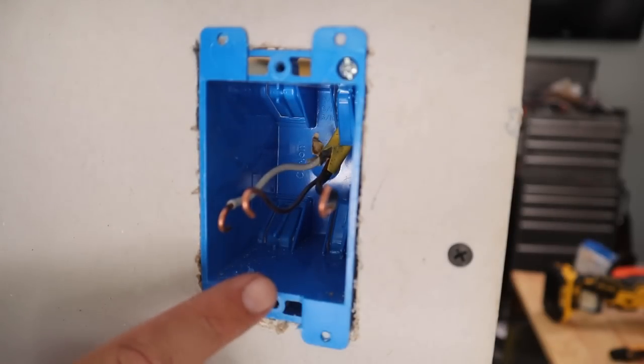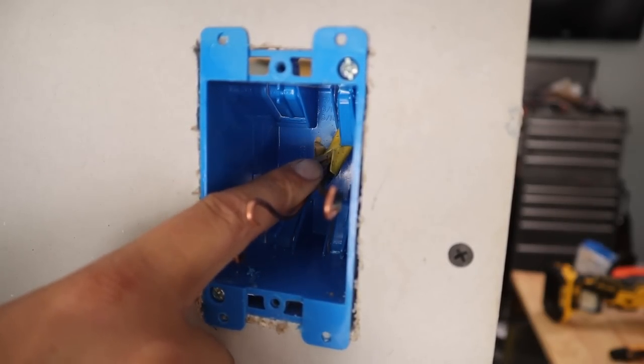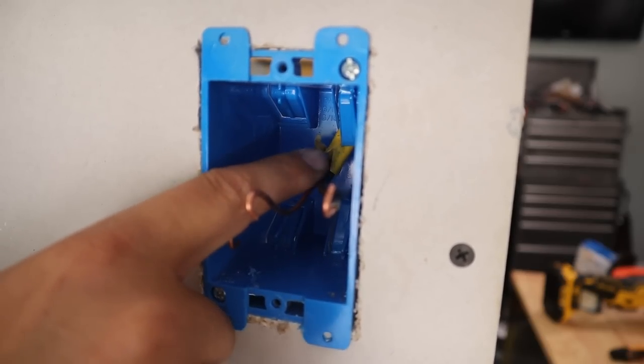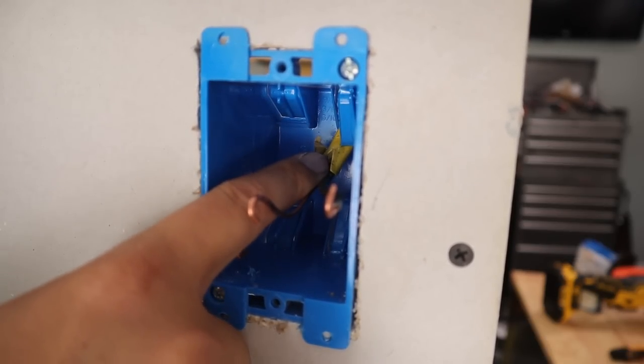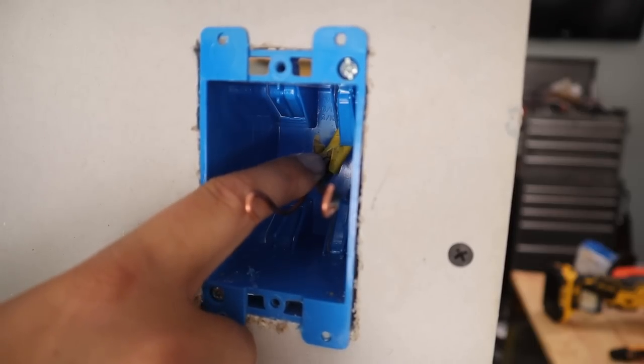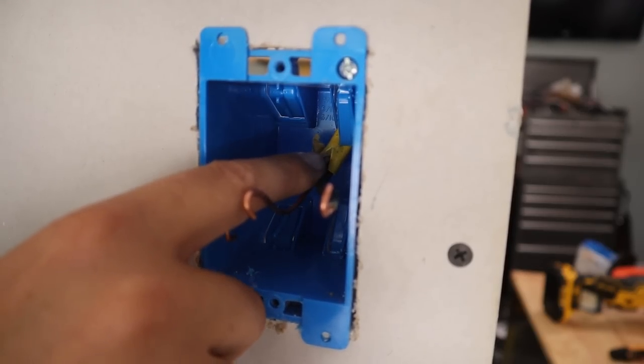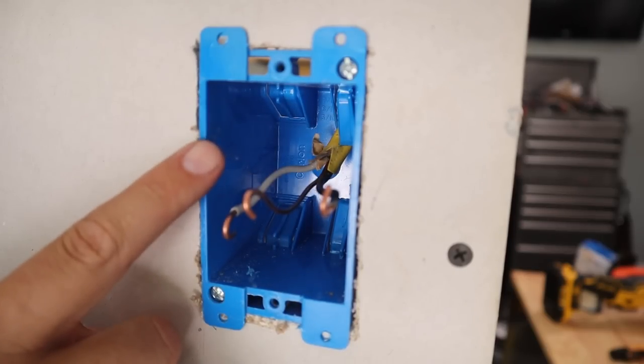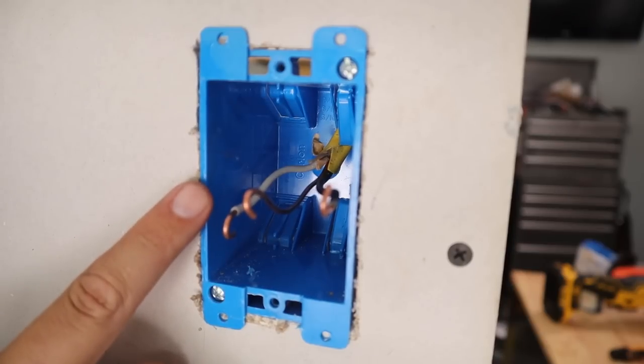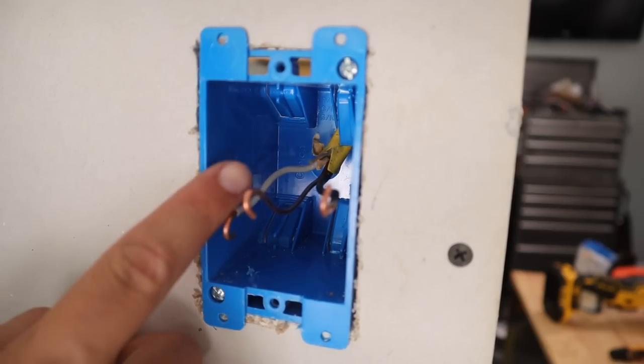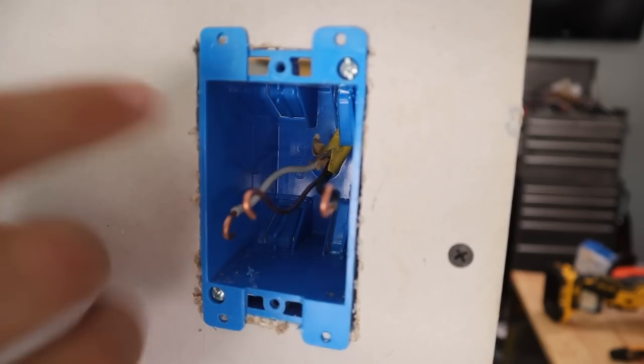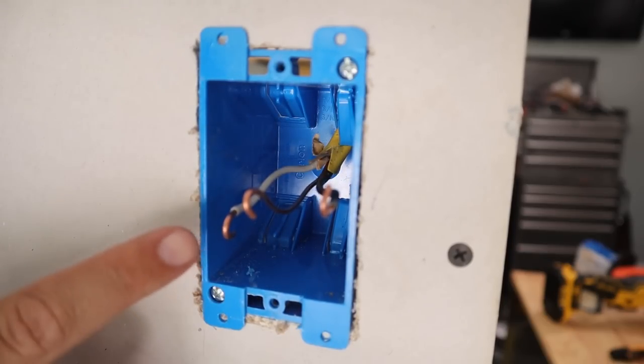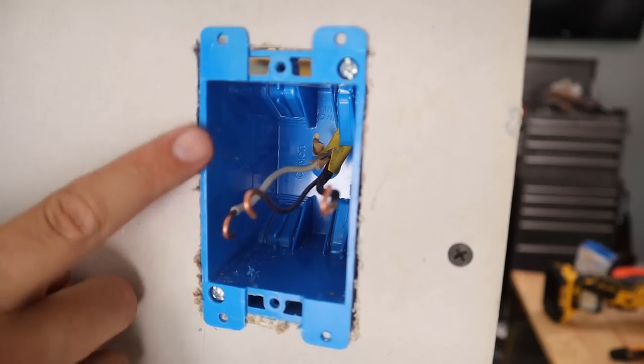So what this is essentially saying is if you see where this wiring is entering into the box, where it still has the sheathing on it right where it enters, from this point there should be at least six inches coming to outside of the box, and then from there, there should be at least three inches that extend beyond the front portion of the box. So not only do we not have six inches, we don't have anywhere near even an inch extending beyond the front of the box here.